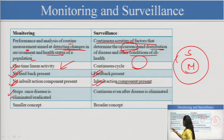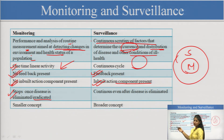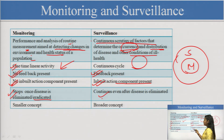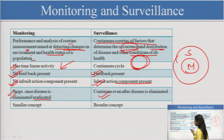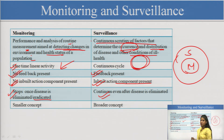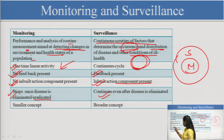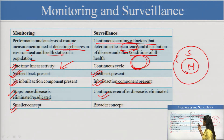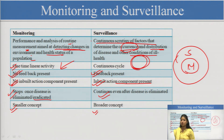Monitoring stops once a disease is eliminated or eradicated, but surveillance continues as a cycle — if any new cases come, we see it again, try to change therapies, and plan new things. Concluding: monitoring is a smaller concept while surveillance is a broader concept. Monitoring is a small subset seen within surveillance.